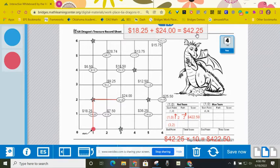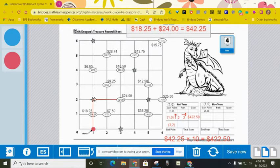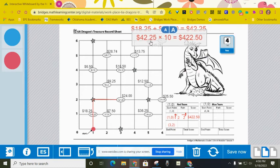I went ahead and added those together and got $42.25. Since I passed a star, I get to multiply that by 10. So my final score for that round was $422.50.